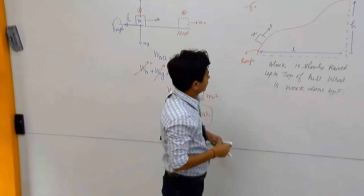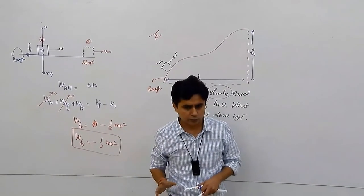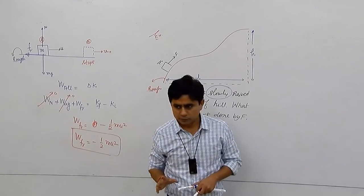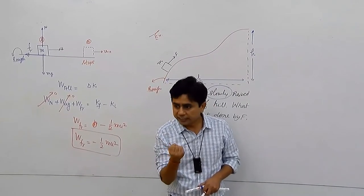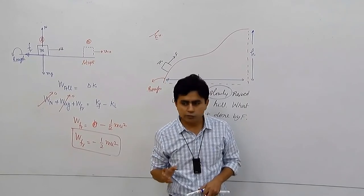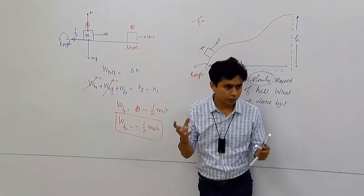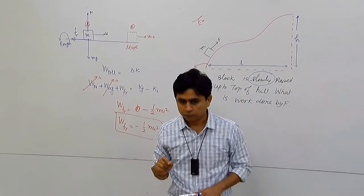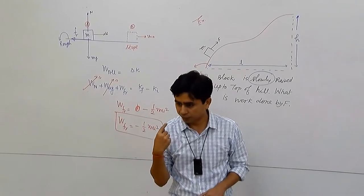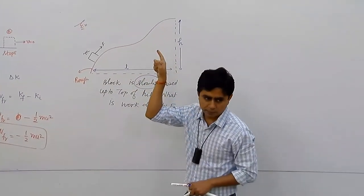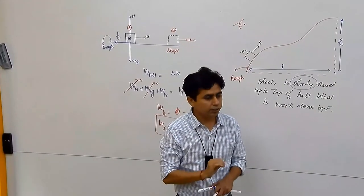The block is raised slowly, meaning at every point the velocity is almost zero. Wherever there is friction, you cannot apply energy conservation, because friction is a non-conservative force — it dissipates energy. Energy conservation applies only for conservative forces. Friction is non-conservative, so no conservation principle can be applied when friction is present.